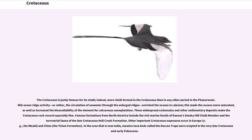The Cretaceous is justly famous for its chalk; indeed, more chalk formed in the Cretaceous than in any other period in the Phanerozoic. Mid-ocean ridge activity — specifically the circulation of seawater through the enlarged ridges — enriched the oceans in calcium, making the oceans more saturated and increasing the bioavailability of calcium for calcareous nanoplankton. Famous formations from North America include the rich marine fossils of Kansas' Smoky Hill Chalk Member and the terrestrial fauna of the late Cretaceous Hell Creek Formation. Other important Cretaceous exposures occur in Europe, for example the Weald, and China, the Yixian Formation.